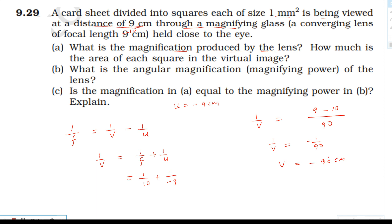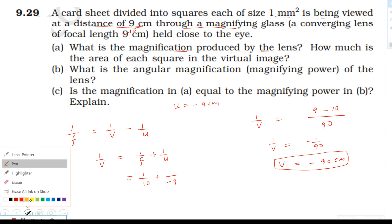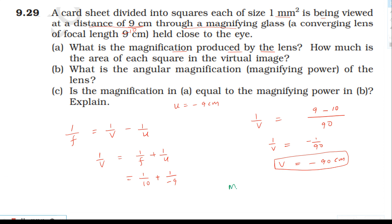The image distance v is minus 90 centimeter, so the image is a virtual image. The magnification formula is image distance divided by object distance. Image distance is minus 90 and object distance is minus 9, so the magnification is 10.